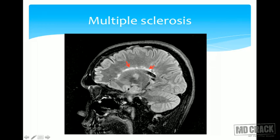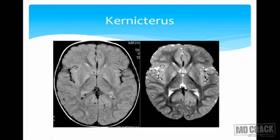White matter disorders: just like tumors, MRI is the modality of choice. In multiple sclerosis, typical lesions perpendicular to the lateral ventricular wall are known as Dawson's fingers.